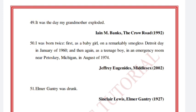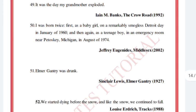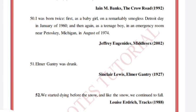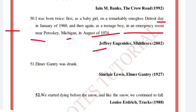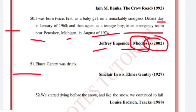'It was the day my grandmother exploded.' Iain M. Banks, The Crow Road, 1992. 'I was born twice: first as a baby girl on a remarkably smogless Detroit day in January of 1960, and then again as a teenage boy in an emergency room near Petoskey, Michigan, in August of 1974.' Jeffrey Eugenides, Middlesex, 2002.